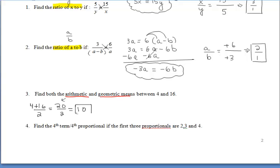For number 3, we wanted to find both the arithmetic and geometric mean. Remember, arithmetic? Think average. So you should have gotten 10. For geometric mean, you should have set it up like this. And don't forget, you should have listed both the positive and negative options for the answer.